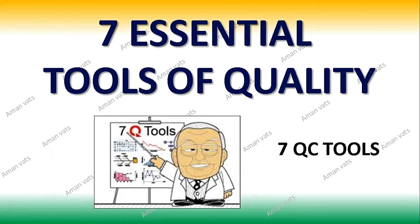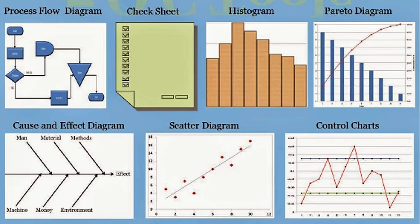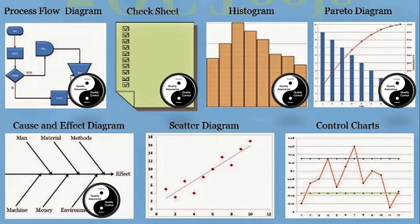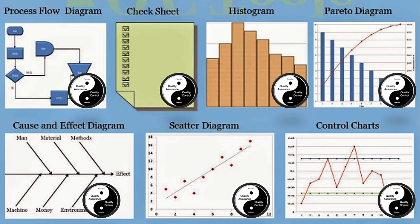Let me tell you what these seven tools of quality are, and maybe in forthcoming videos I will explain each and every tool in detail for in-depth learning. The seven tools are: process flow diagram, check sheet, histogram, Pareto diagram, cause and effect diagram, scatter diagram, and control charts.